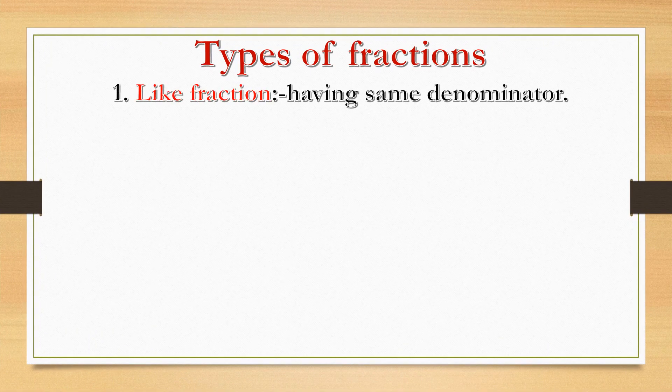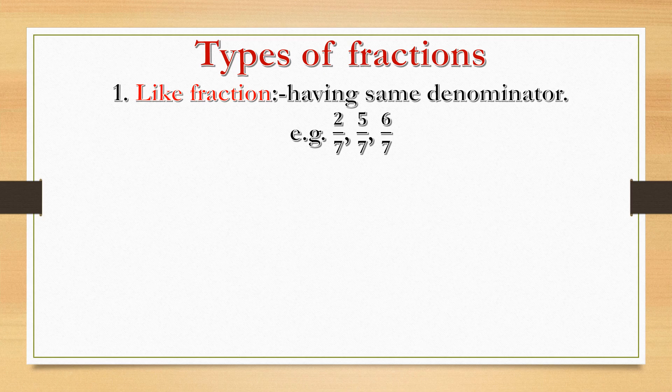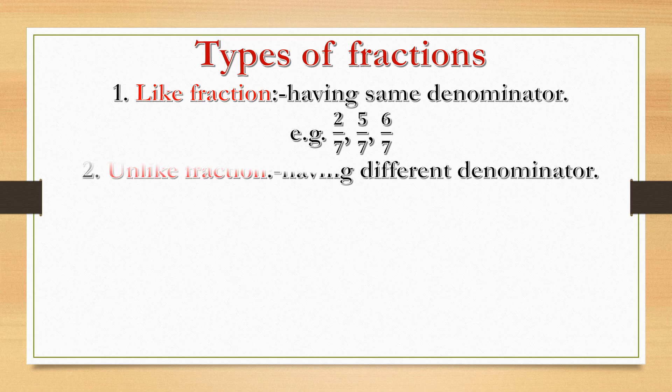Now let's recapitulate the types of fractions. As you all know, you have already done these in fourth standard. There are six types of fractions. Number one: like fractions — fractions having the same denominator. For example, two by seven, five by seven, six by seven — all denominators are seven. Unlike fractions have different denominators.